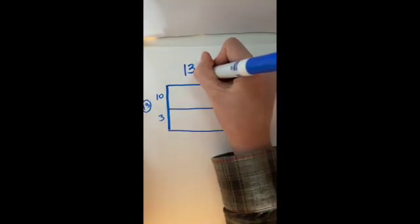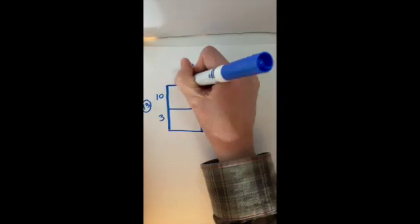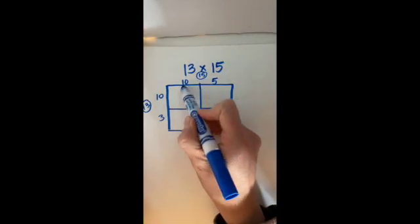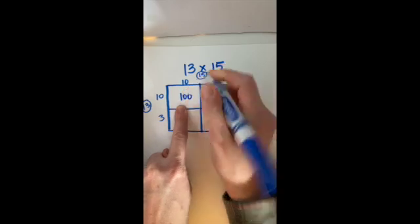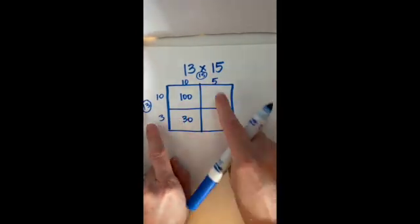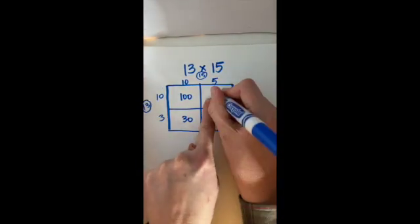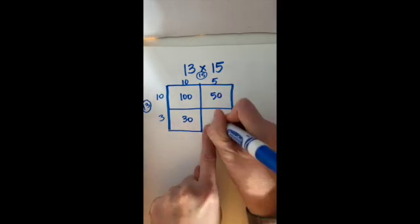And on the other side, I'm going to do my 15 and break that up into 10 and 5. Now I'm going to multiply out each of the parts. 10 times 10 is 100, 3 times 10 is 30, 10 times 5 is 50, and 3 times 5 is 15.